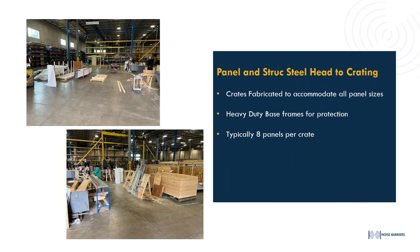Assuming all materials are back in our shop — columns back from the powder coater and all panels ready — it's time to crate everything. We custom make every crate to fit the panels. An 11-foot panel, for example, goes into a 12-foot crate. Crates are four-sided with an extremely sturdy base using four-inch by four-inch wood beams — not a typical pallet but a custom heavy-duty pallet. For barrier panels we try to get eight panels into a crate, though it may run slightly less depending on thickness and size.